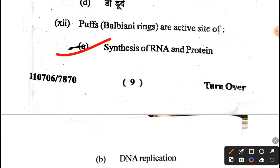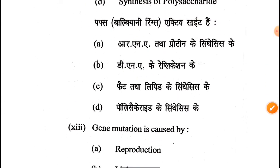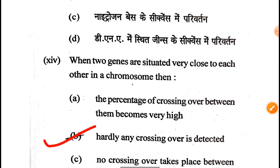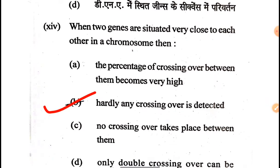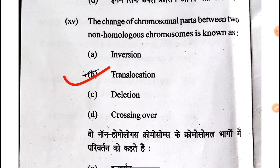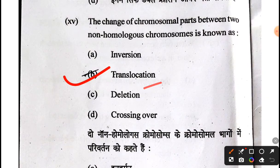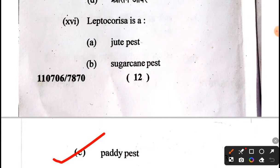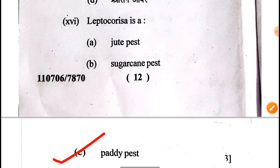The nucleolus — the ball-shaped structure — is the active site of synthesis of RNA and protein. Gene mutation is caused by a change in the sequence of nitrogen bases. If two genes are situated very close to each other on a chromosome, then there is hardly any crossing over that takes place. The change of chromosomal parts between two non-homologous chromosomes is known as translocation. The last objective question: Lacrophora is a pedipest.